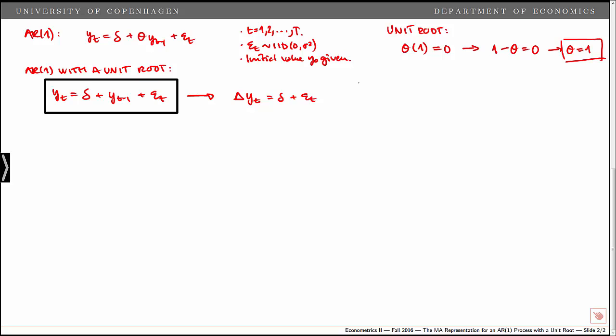In the special case where the constant term δ = 0, we call this a random walk. The change is then just given by a random error term, a white noise process. In the general case where δ ≠ 0, we call the process a random walk with drift.